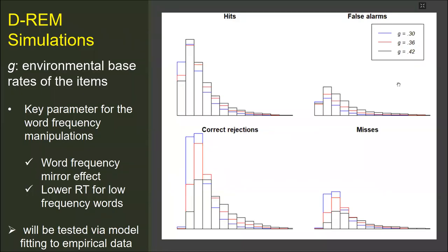First, I manipulated the g value while the other parameters are fixed. As I told you before, the g value is related to the word frequency. As g increases, the hit rate increases and false alarm decreases, which reveals the classical word frequency mirror effect. Moreover, as g increases, the responses are made faster, as is observed in the literature. How the model accounts for the word frequency effect will be tested via model fitting procedures to empirical data.